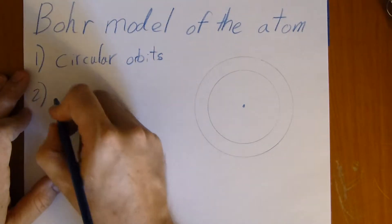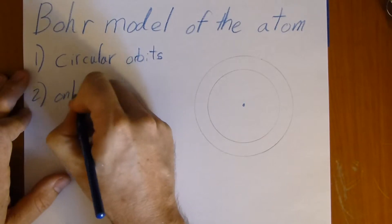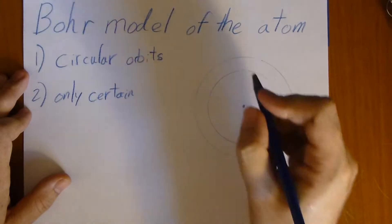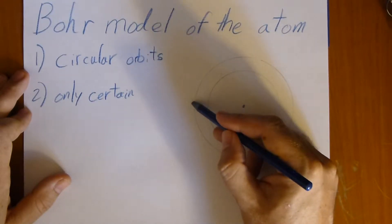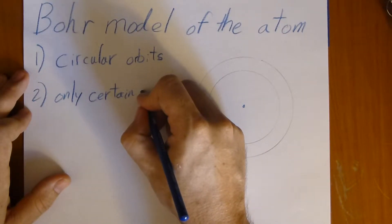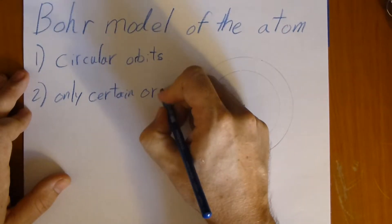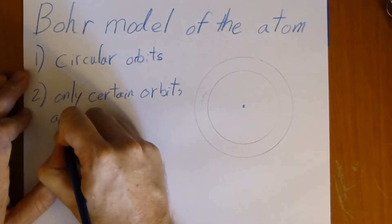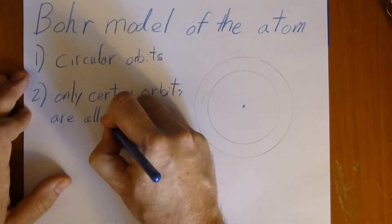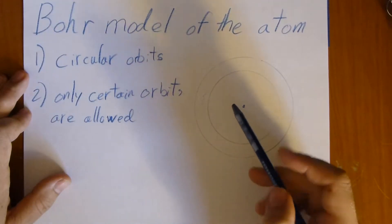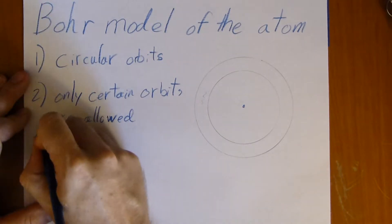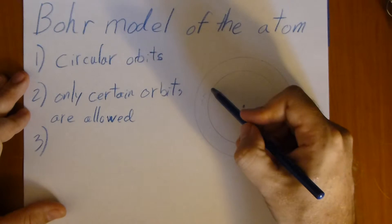Two, only certain orbits are allowed, which is to say we can be here, we can be here, we can't be here. Now, we're going to say that these have different energy.